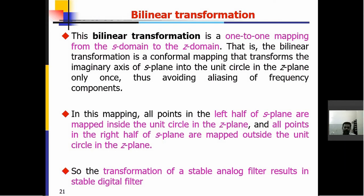Bilinear transformation is a one-to-one mapping from S-domain to Z-domain. It is a conformal mapping that transforms the imaginary axis of the S-plane into the unit circle in the Z-plane only once, thus avoiding aliasing of frequency components.